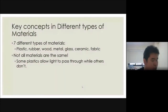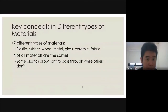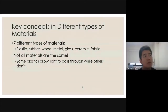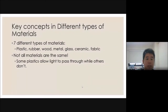For those who have followed the lesson, there are seven types of materials you have learned: plastic, rubber, wood, metal, glass, ceramic, and fabric. Not all materials are the same even within the same type — for example, some plastic allows light to pass through, some does not; some plastic is strong, some is weak, some is flexible, some is stiff. There are seven types of materials that are quite common.